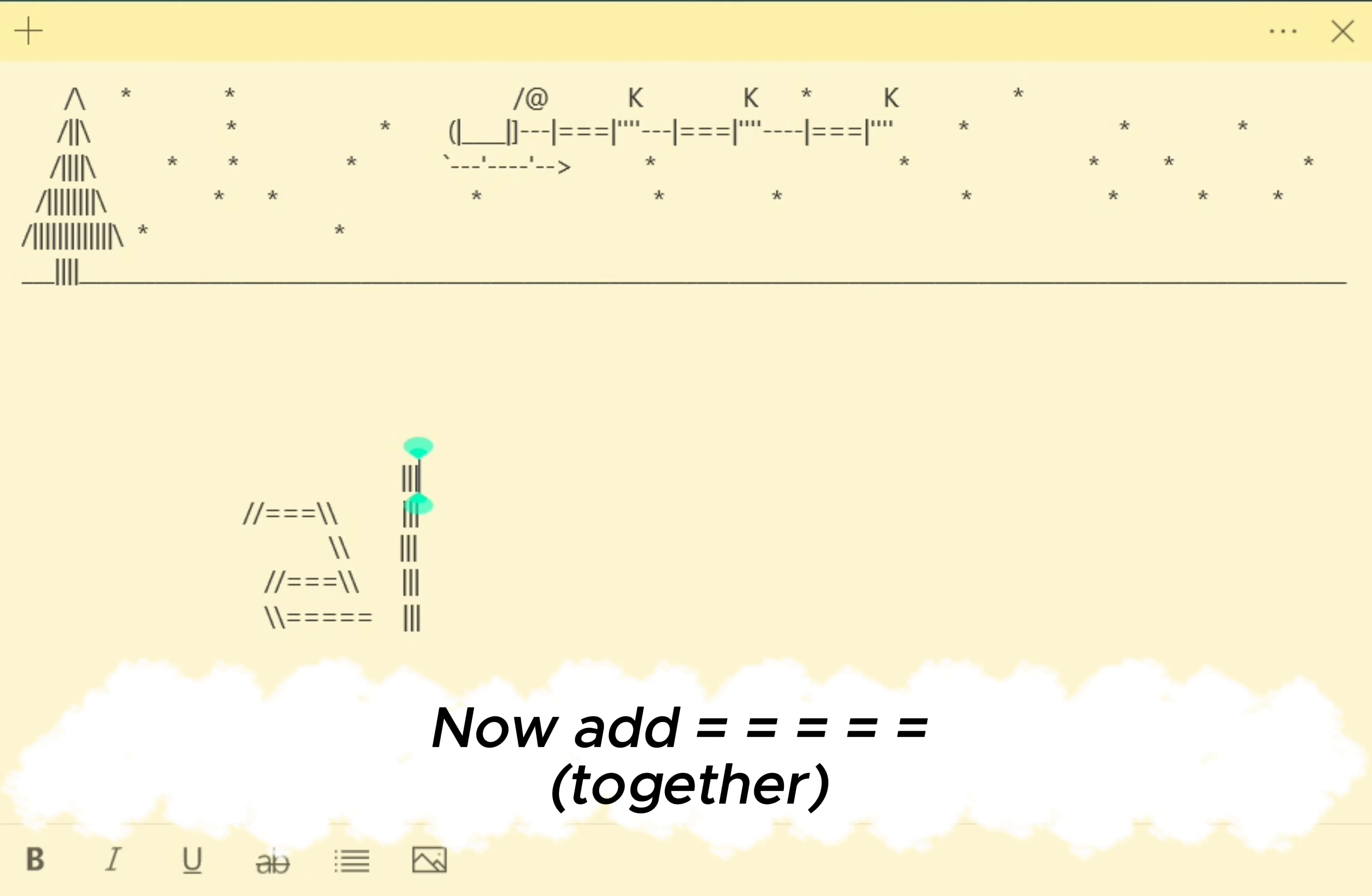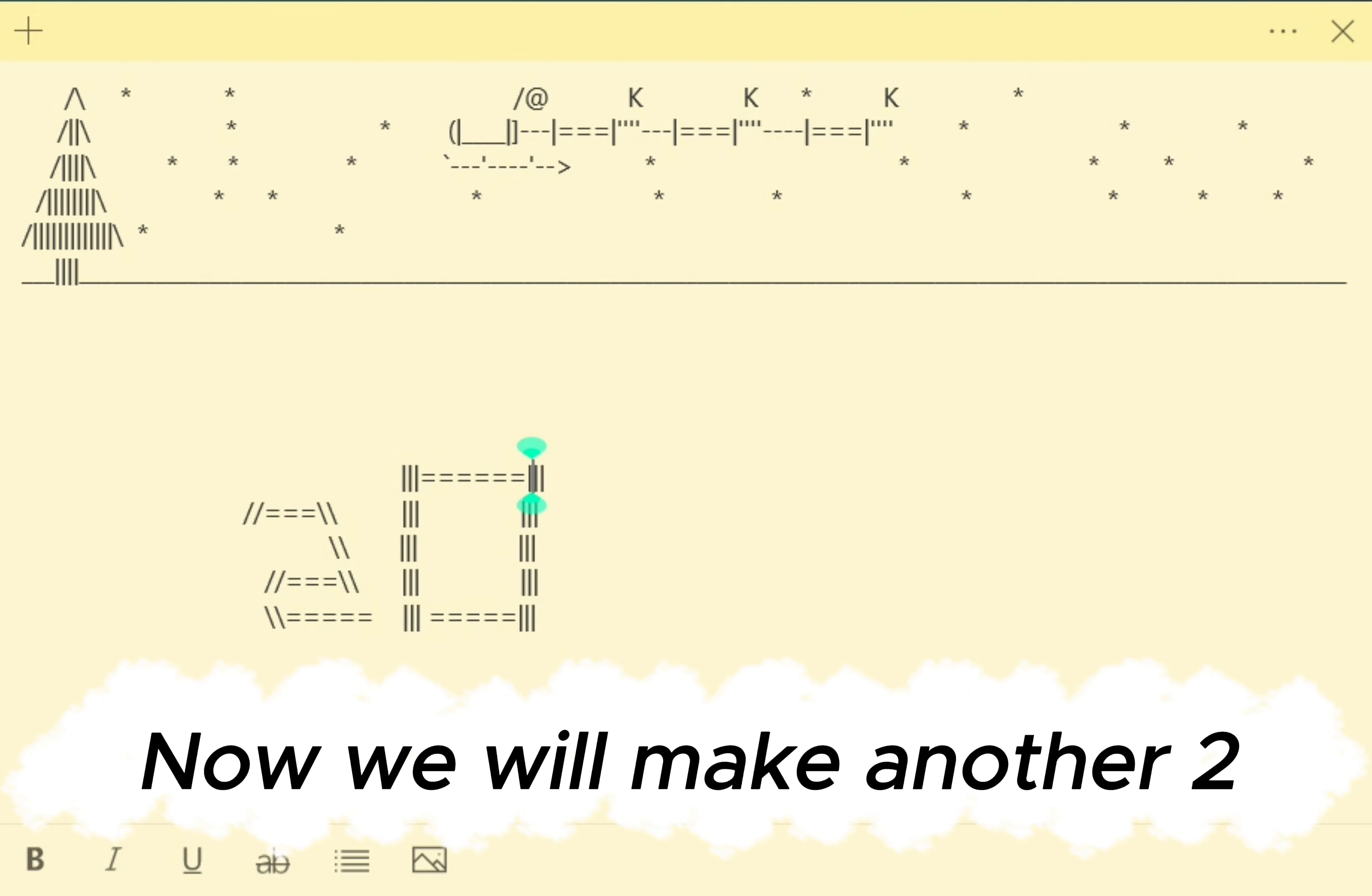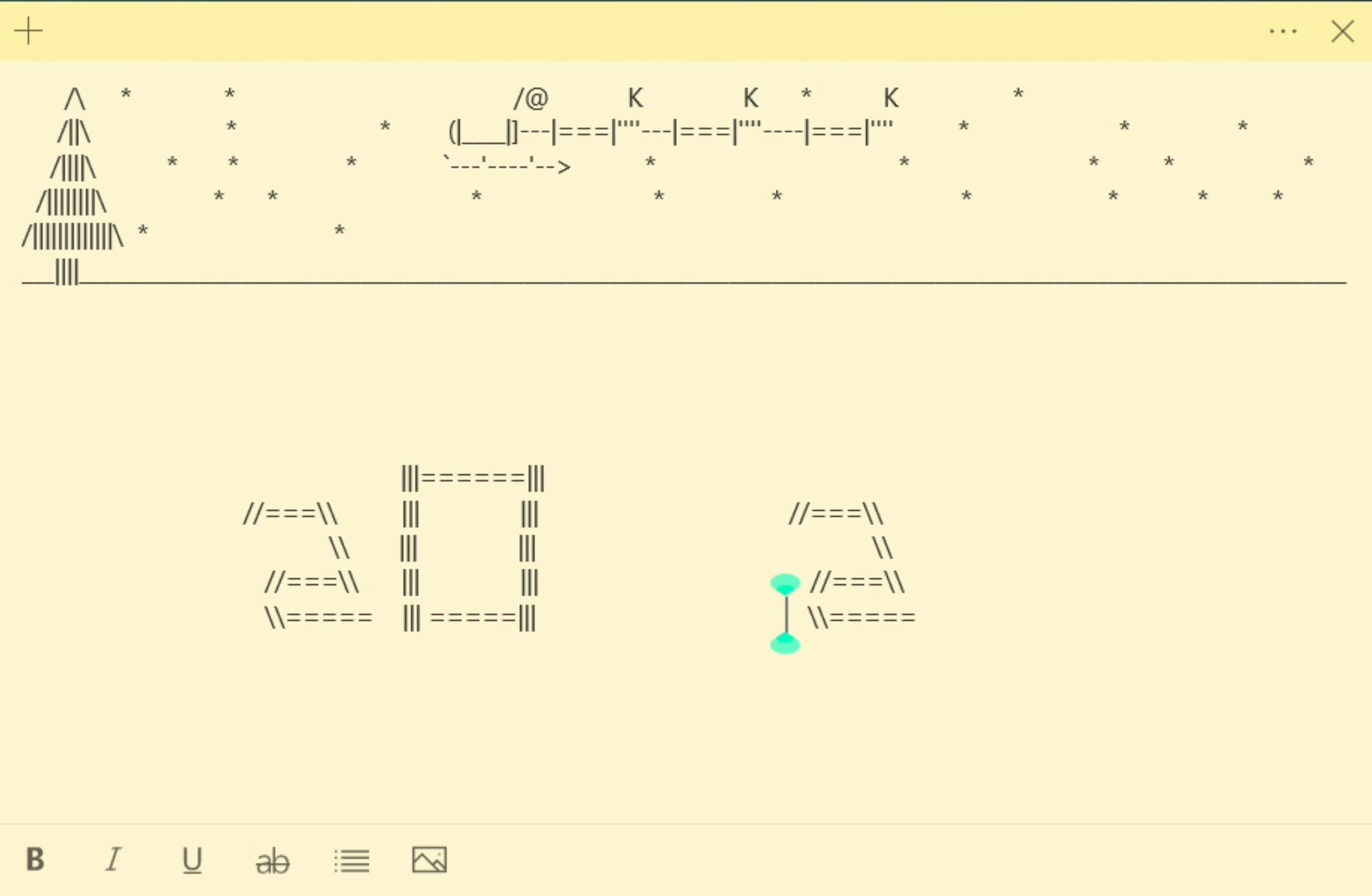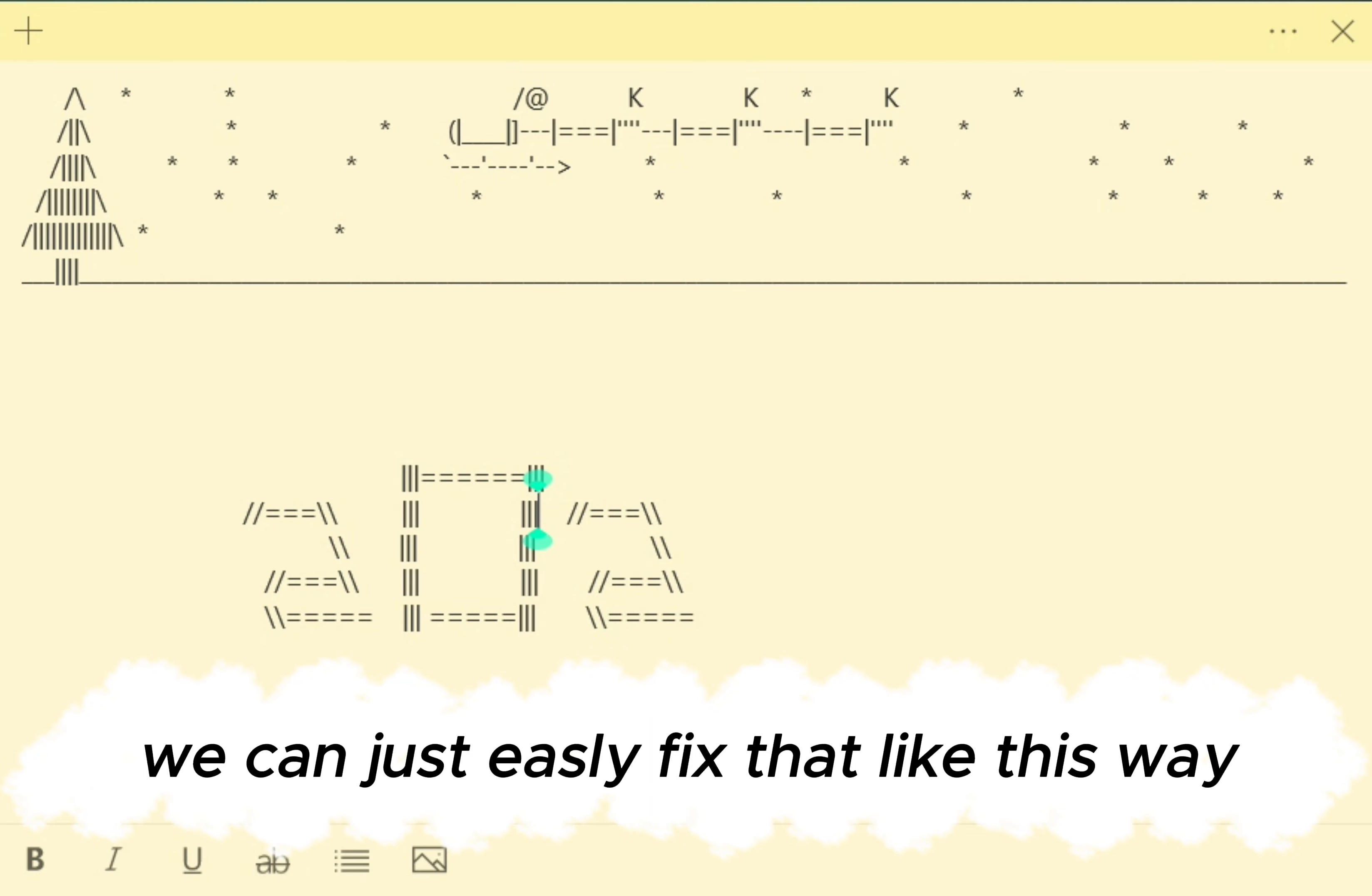Now add together. And under two. And connect it with another pillar. Now we will make another two. Looks like zero is a bit too high. We can just easily fix that like this way.